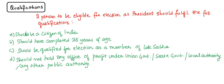There are certain qualifications a person must possess to be eligible for election as President. First, he or she should be a citizen of India. Second, he or she should have completed 35 years of age. Third, he or she should be qualified for election as a member of the Lok Sabha. And fourth, he or she should not hold any office of profit under the union government, state government, or any local or public authority.